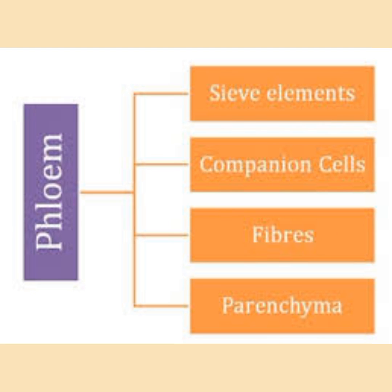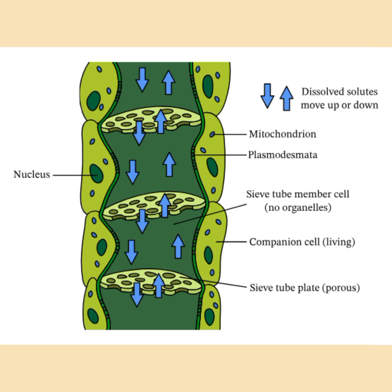Phloem tissues consist of sieve elements, companion cells, fibers, and parenchyma. The majority of phloem tissue is made up of sieve elements and companion cells. The structure of phloem is specialized for the role of translocation. Sieve tube elements are the cells that make up the phloem vessel.